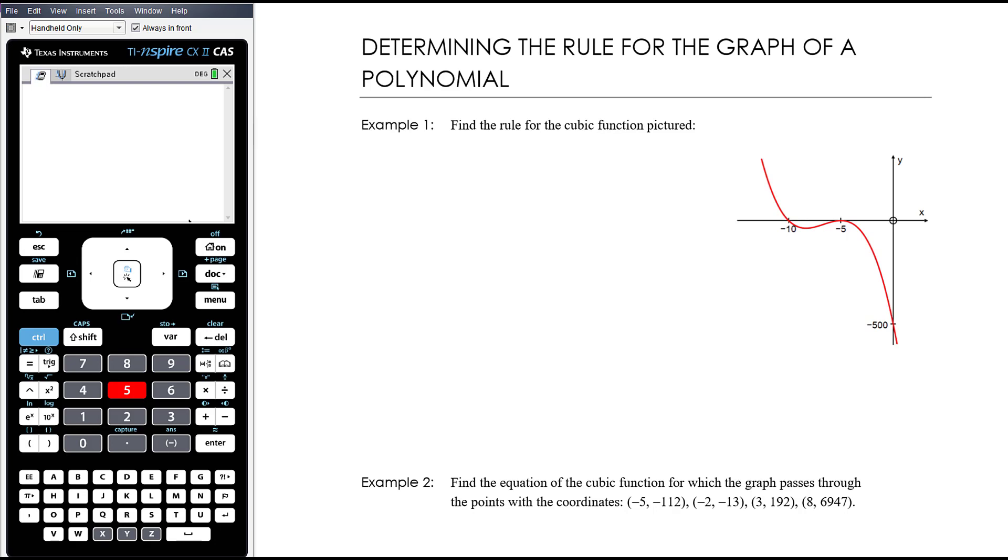So example one, find the rule for the cubic function pictured. OK, so the first thing I'm seeing is that it is an odd degree polynomial. That's because it starts in one direction, it finishes in a different direction. If it was even it would start up and finish up.